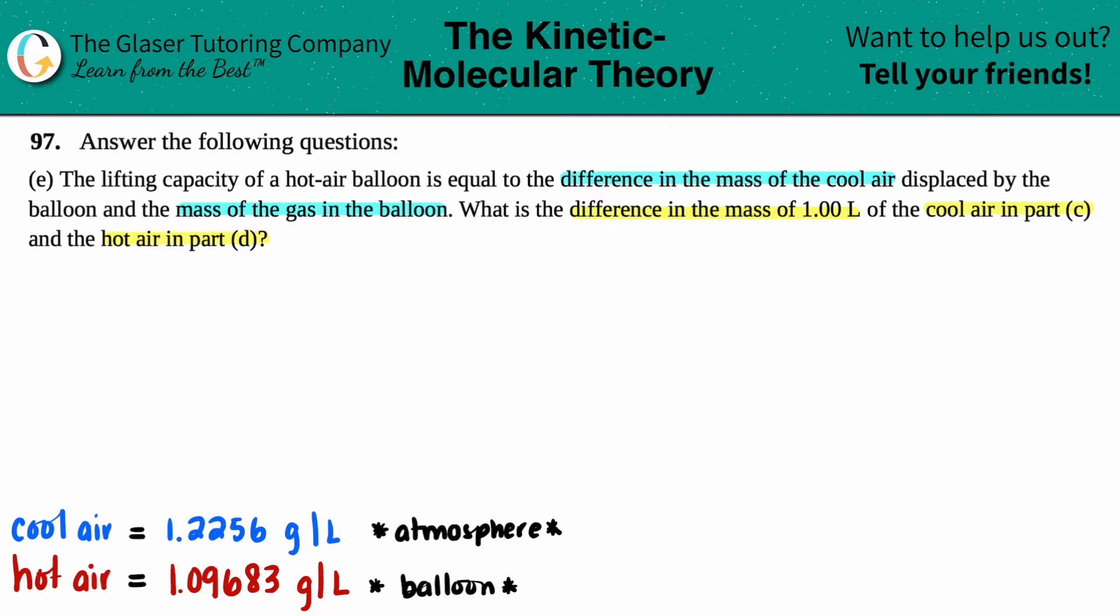So I went back into part C and part D and found the numbers that we needed. All we needed were the density values. These are the density values and remember going through this problem we did explain that the hot air balloon is less dense than the atmosphere.